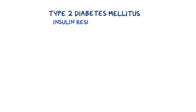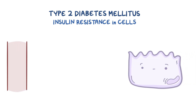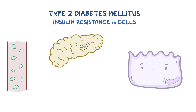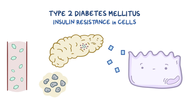Type 2 diabetes is caused by insulin resistance in the cells of the body. When blood glucose rises after a meal, the pancreas produces insulin as a response. Since the peripheral cells are resistant to insulin, they do not take in the glucose, so the pancreas has to produce even more insulin. Eventually, the poor pancreas gets so overworked that the beta cell starts to atrophy, which leads to decreased insulin production and high blood glucose levels.